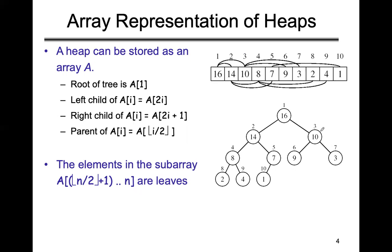Even-numbered indices are left children and odd-numbered indices are right children. For node at index 2, its children are at indices 4 (left) and 5 (right). The parent of any child node is calculated as floor(i/2). For node at index 4, parent is at index 2; for node at index 8, parent is at index 4; for node at index 10, parent is at index 5; for node at index 6, parent is at index 3; for node at index 7, parent is also 3.